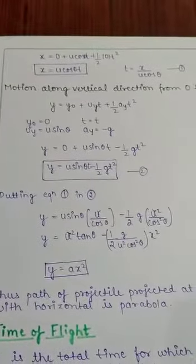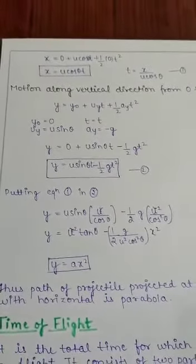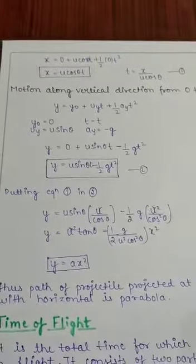Thus, the path of the projectile projected at some angle with the horizontal is always a parabola.